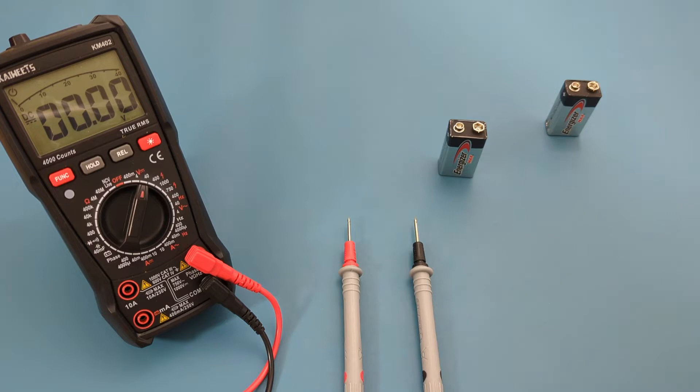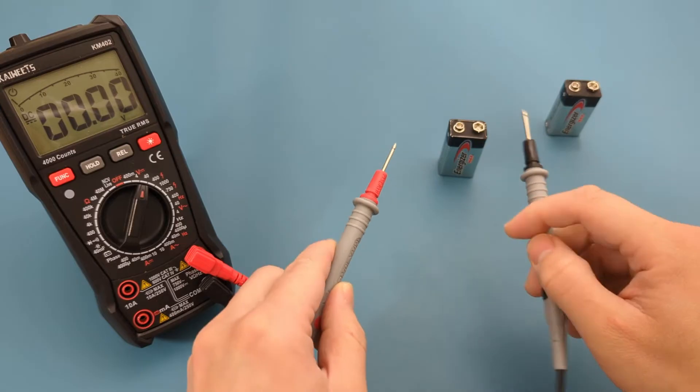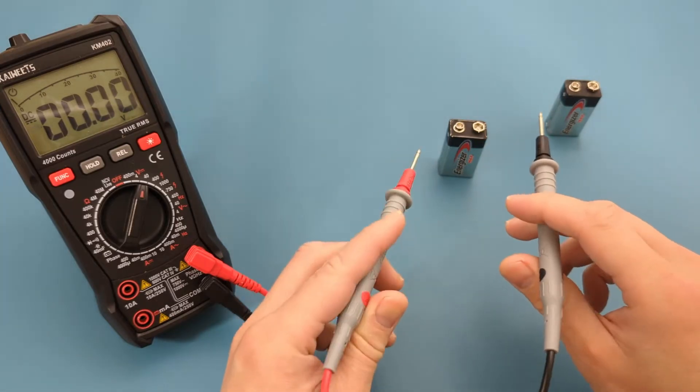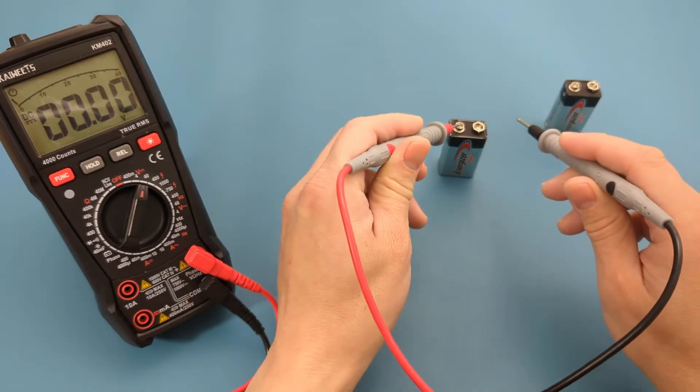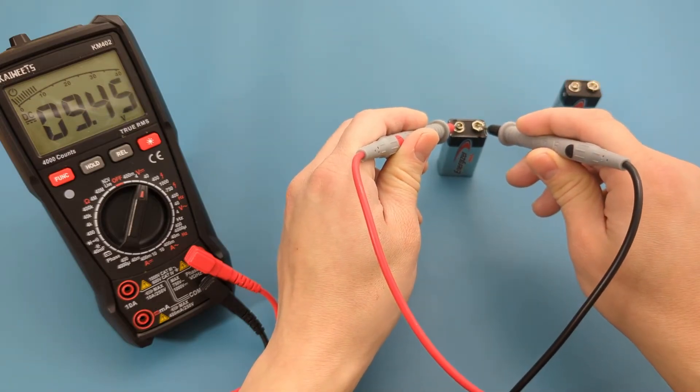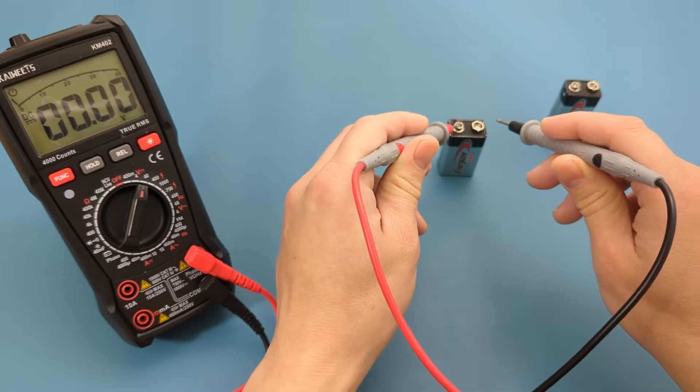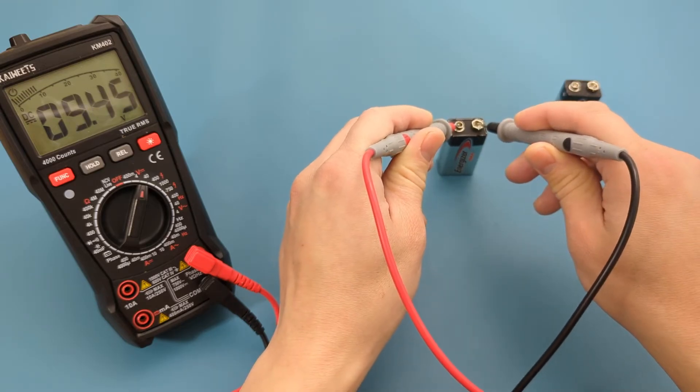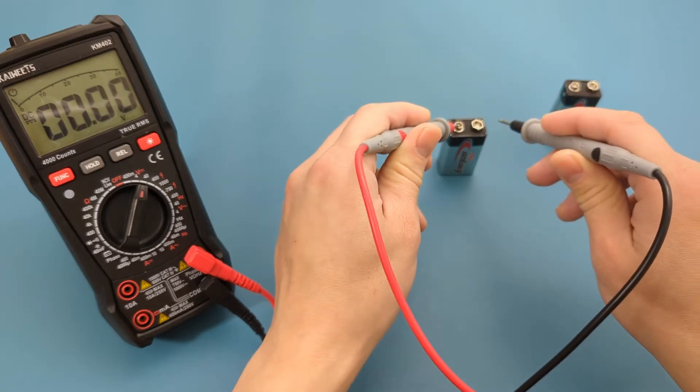The red probe represents the positive terminal, while the black probe indicates the negative terminal. Touch the red probe lead on the positive terminal of the battery and the black probe lead on the negative terminal. We're measuring 9.4 volts. For a new 9-volt battery, it can be slightly over 9 volts.